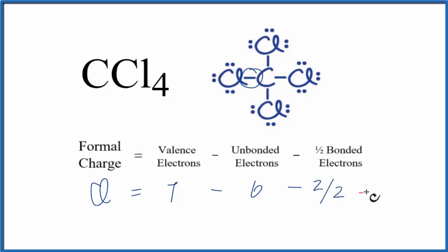So we have 2 of those, and we have 7 minus 6, that's 1 minus 1, that gives us 0. So the formal charge on this chlorine atom is 0.